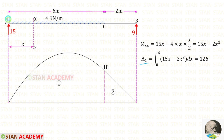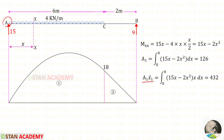The limits for the integration are 0 to 6. Using a calculator to do this integration, area 1 comes out to 126. Now let us find area 1 × x̄₁ about point A. For this we also do integration — we multiply the moment expression by x. This gives area 1·x̄₁ equal to 432.